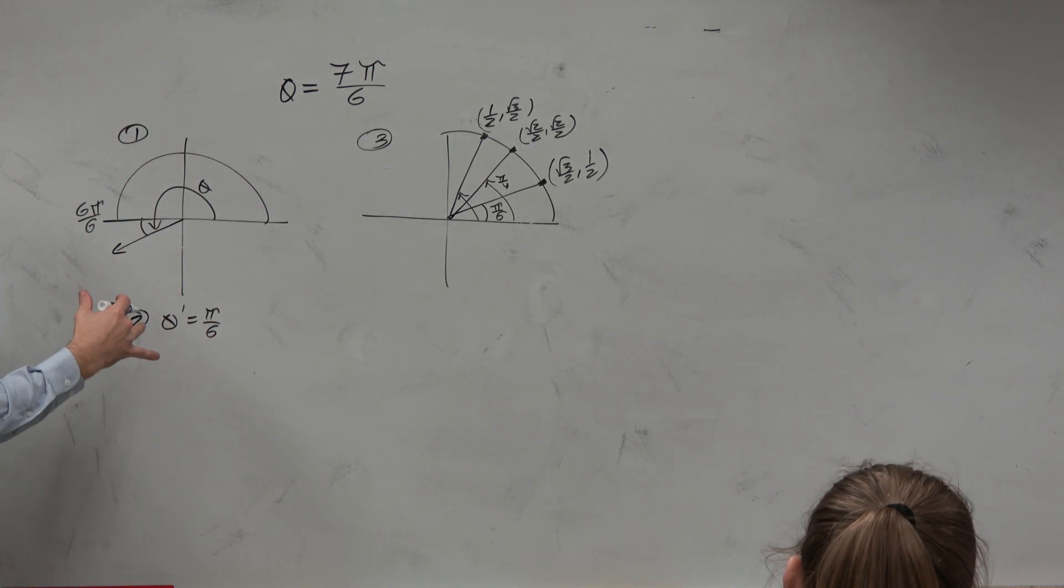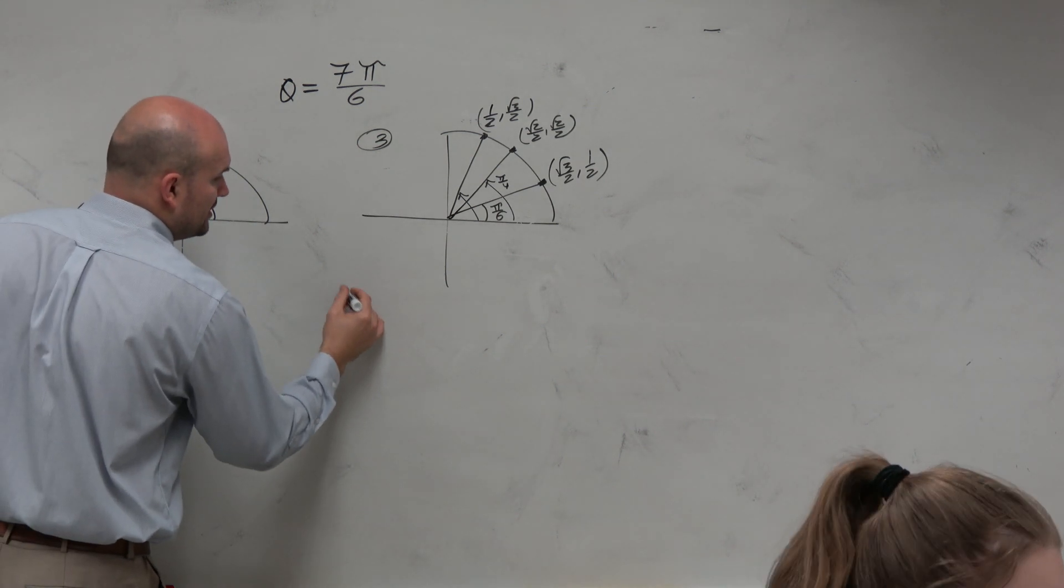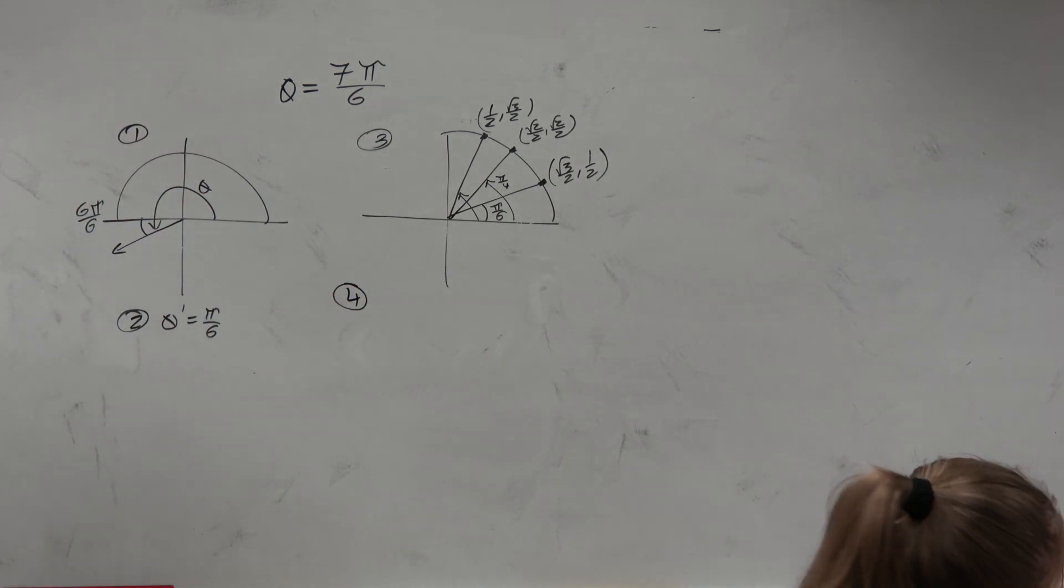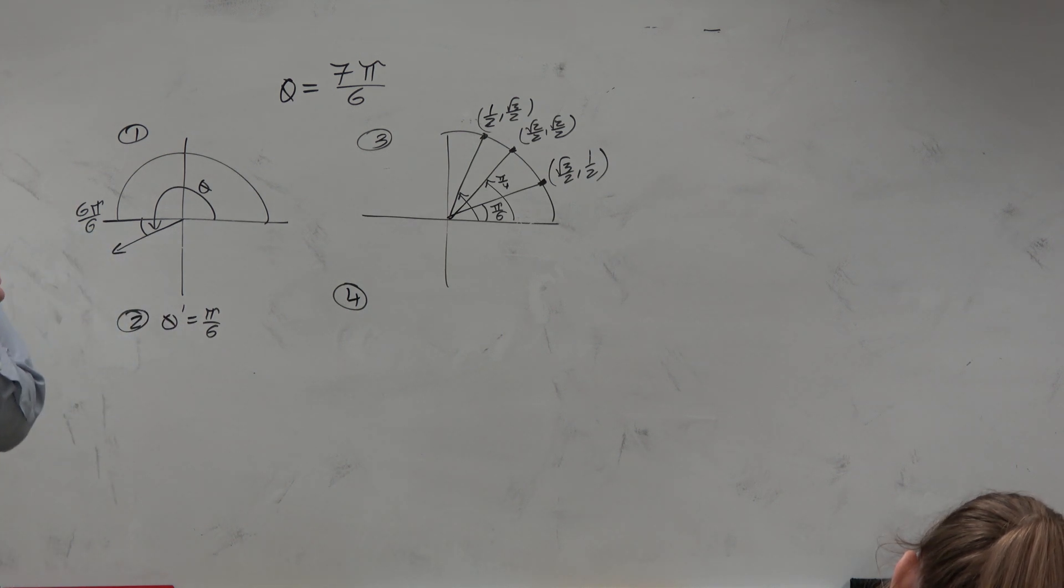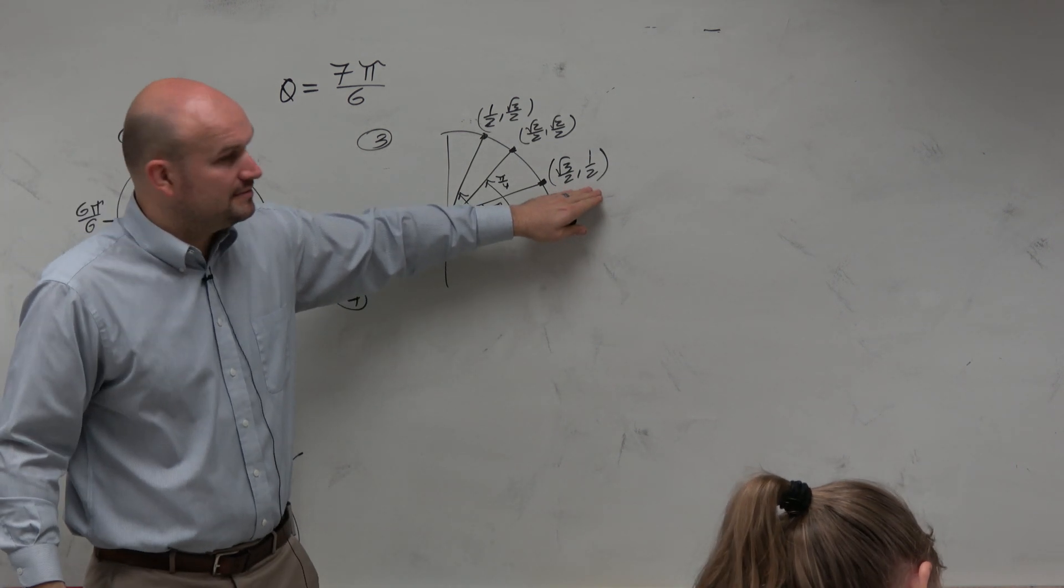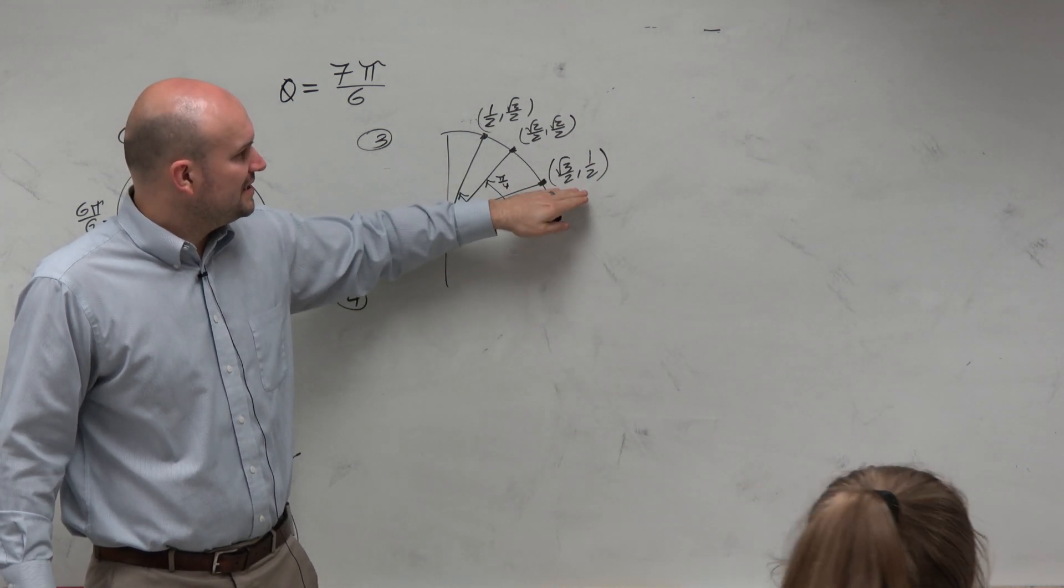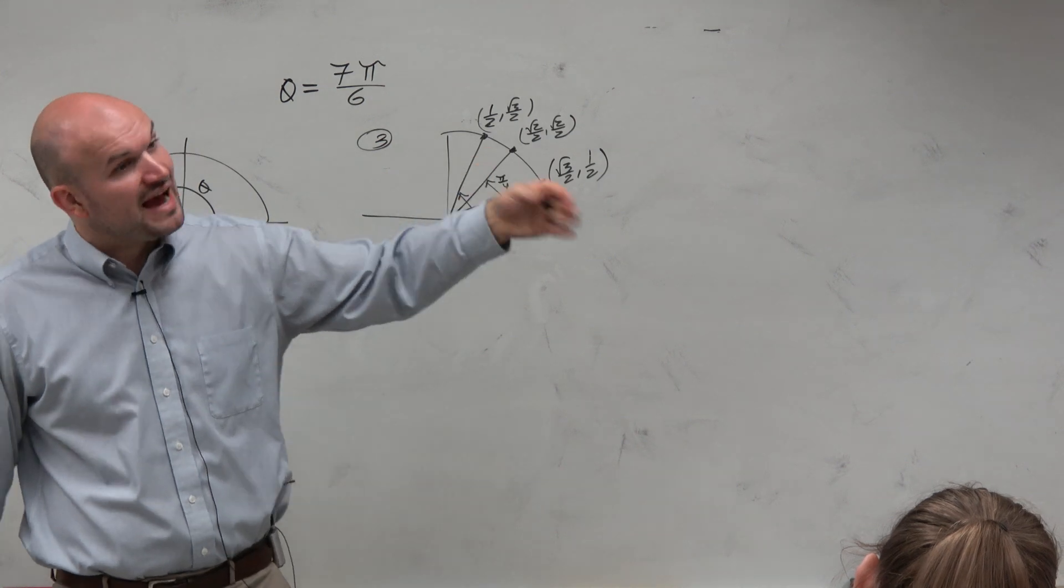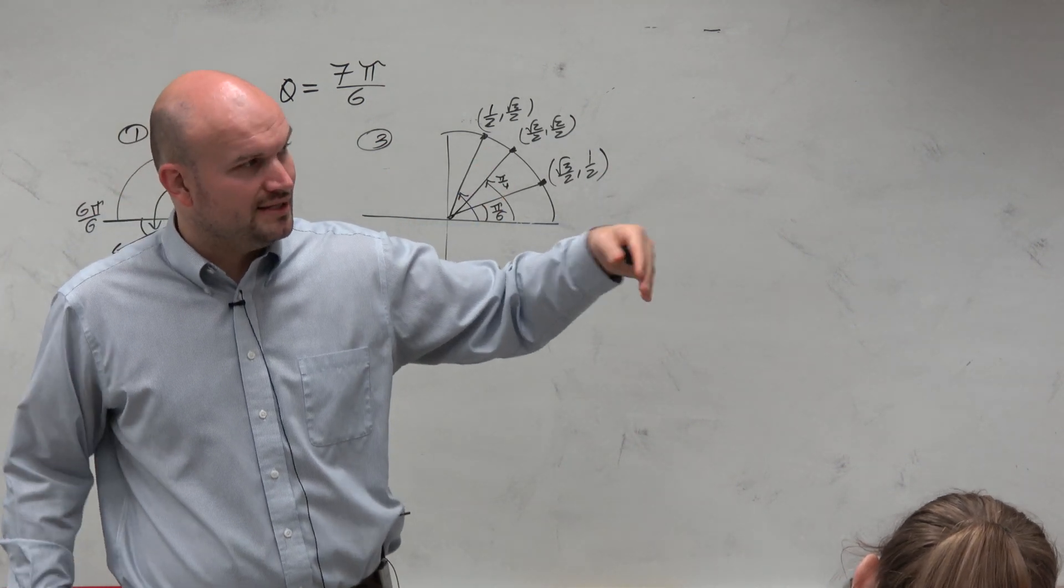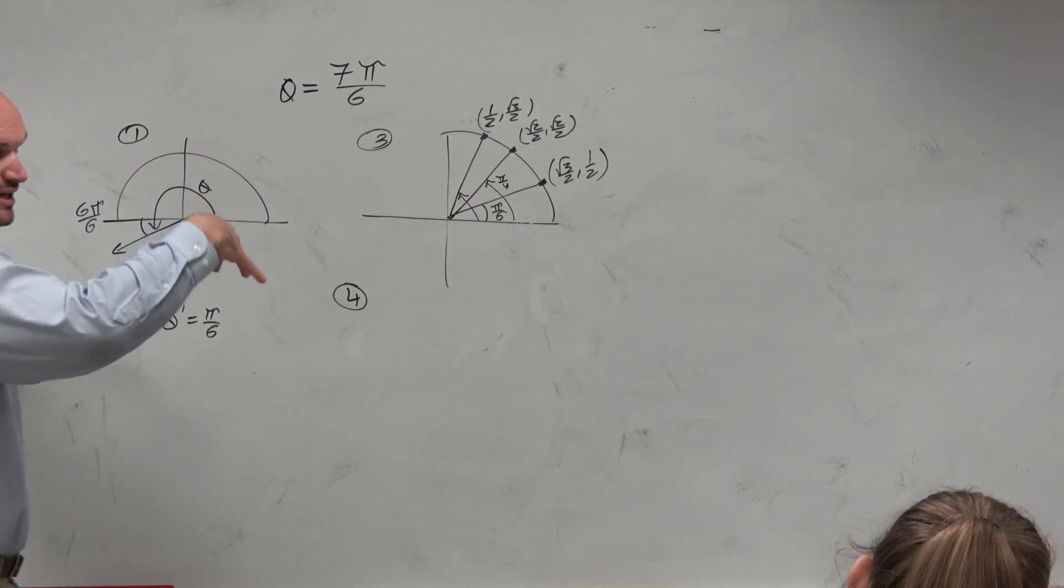So I know pi over 6, it has the same value. But we know the signs are going to be different. So step number four is now to evaluate based on, given the trig function, evaluate the trig function given that point. I would also like you to quickly move into step five, which is apply the sign based in that quadrant.